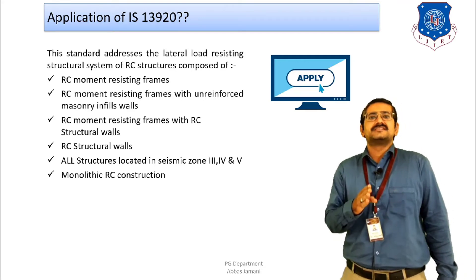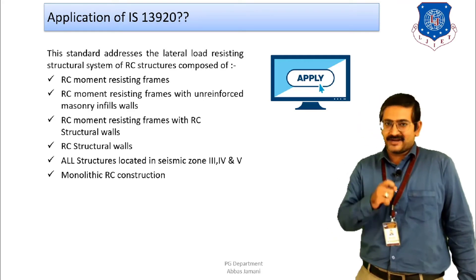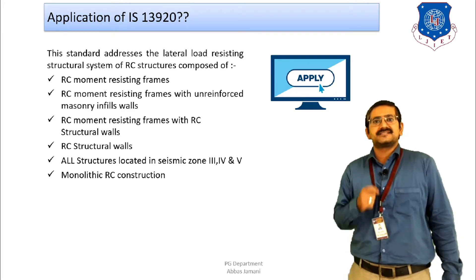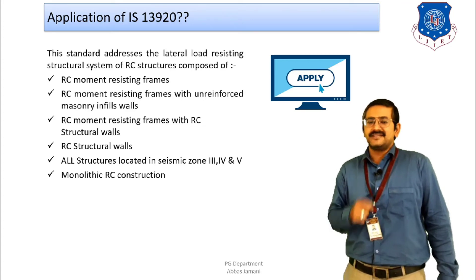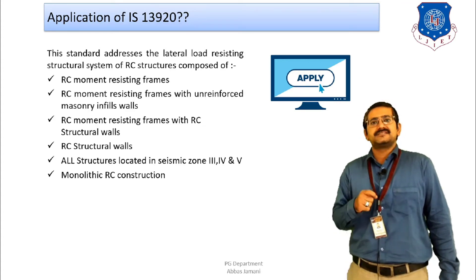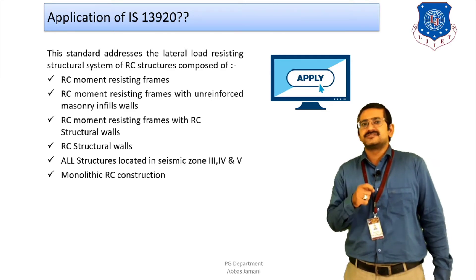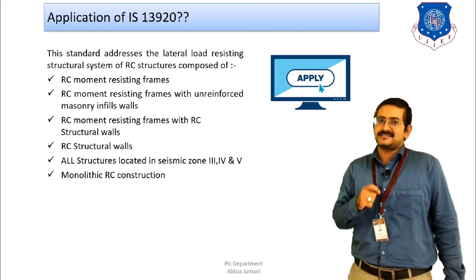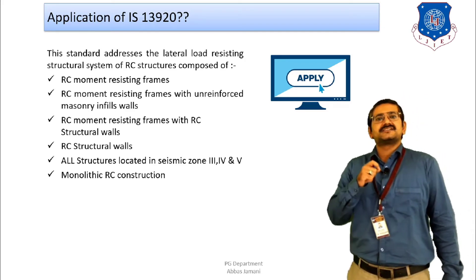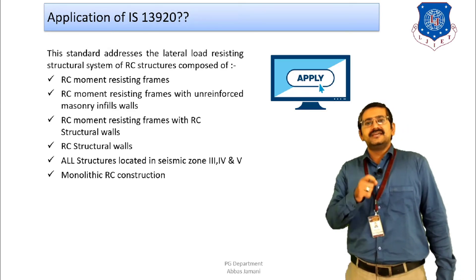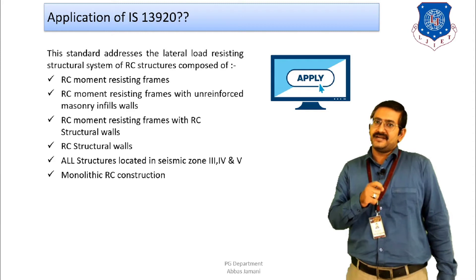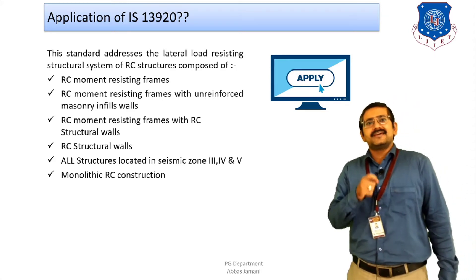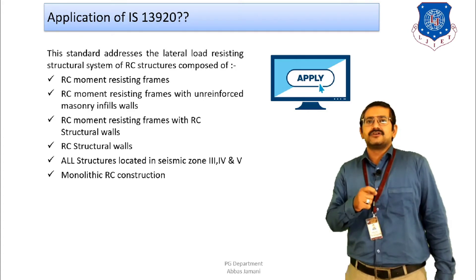These are the four basic types of structural systems where IS 13920 and the concept of ductility can be applied. Additionally, all structures located in seismic zones 3, 4, and 5 must compulsorily follow IS 13920, whether it is a ground story structure, high-rise building, or skyscraper. If construction is done monolithically, application of IS 13920 is also compulsory.